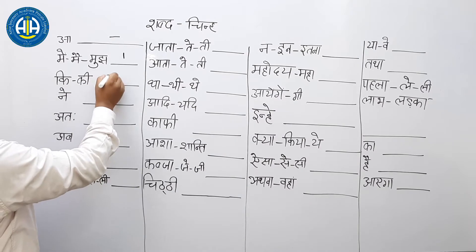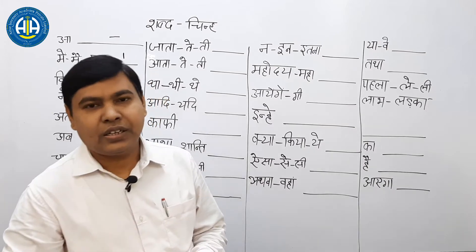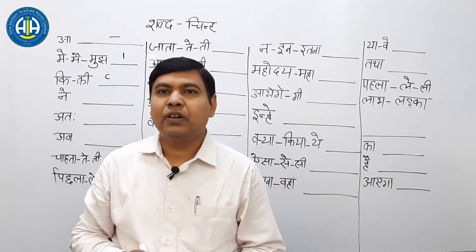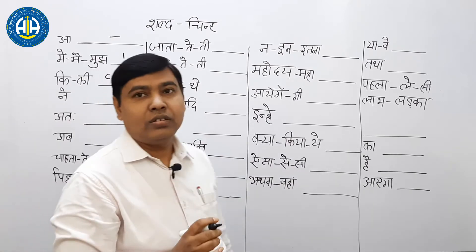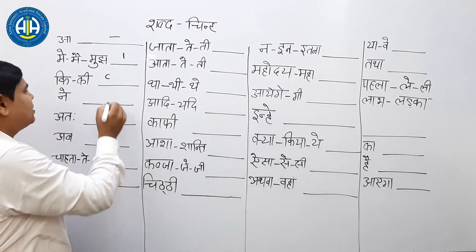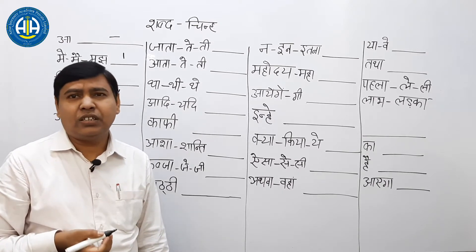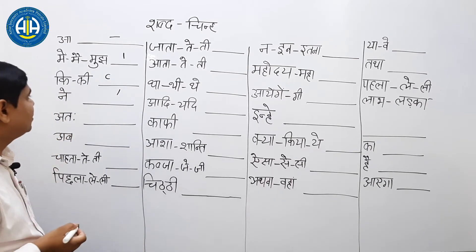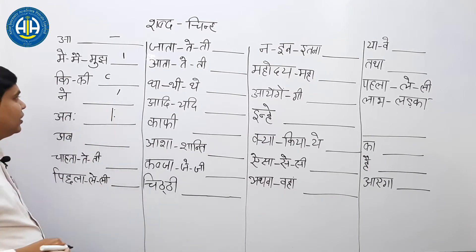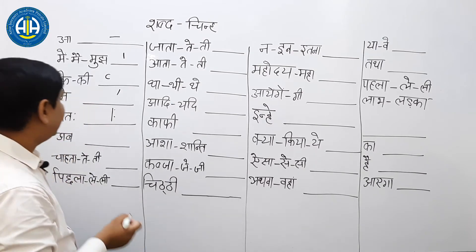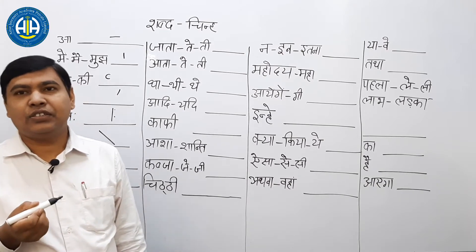फिर आता है 'ने'। ने के लिए आपको बनाना क्या है — इनकी जो outline है, बस simple ऐसे बना देना है। अता के लिए, ता है — ये ता बनाके दो बिन्दू लगा देना है। अब के लिए 'वह' बनाना है — ये dark में, line से touch करके।